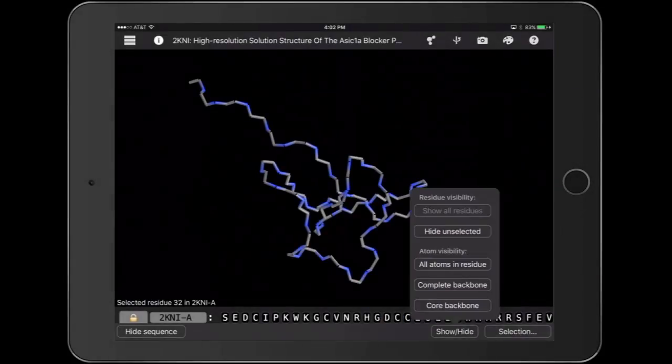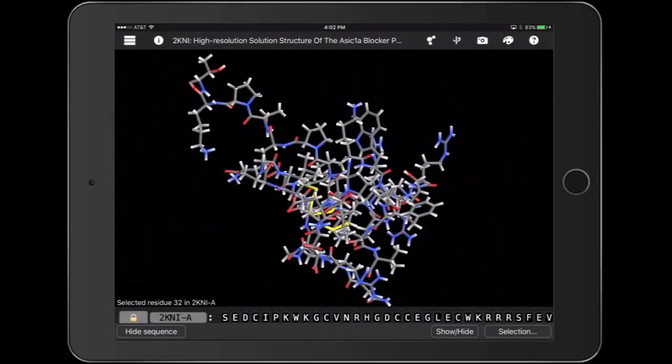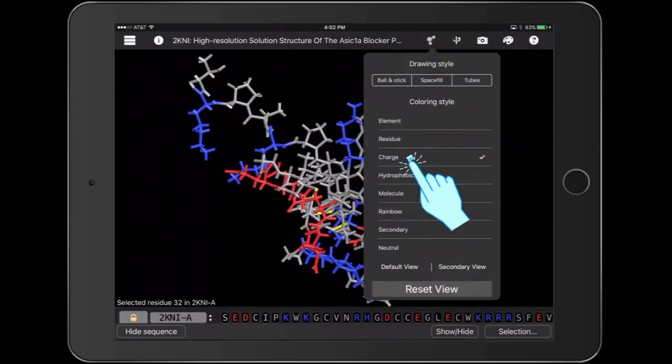Now we're going to look at our protein and we're going to show all the atoms in the residue and we're going to color by charge.